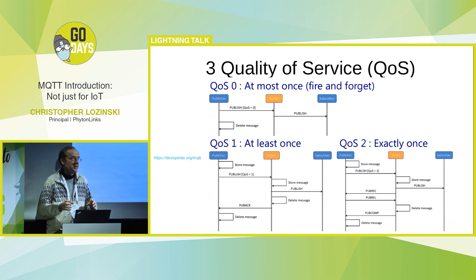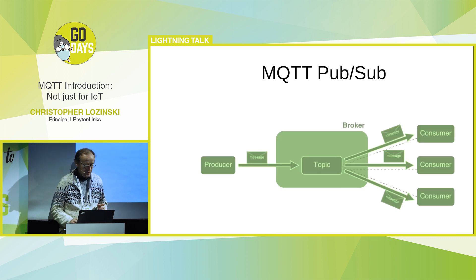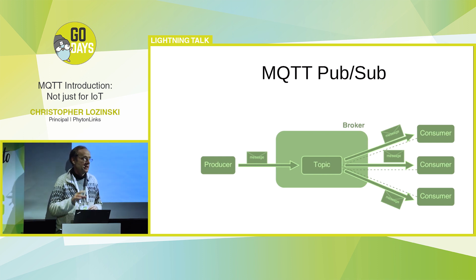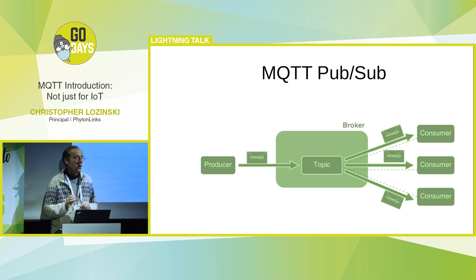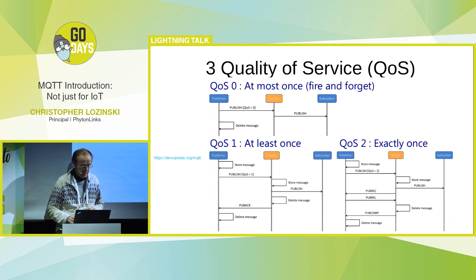There's a lot of technical detail about how it handles quality of service. It has three different quality of service levels. Even if it's disconnected, the message will go through. Quality of service level zero is best effort. Quality of service level one is guaranteed at-least-once delivery, and quality of service level two is guaranteed exactly-once delivery.